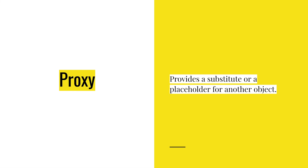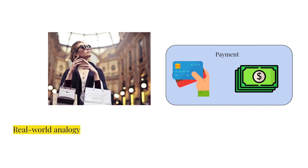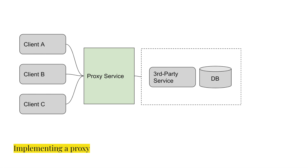The proxy pattern lets you provide a substitute or placeholder for another object. A proxy controls access to the original object, allowing you to perform something either before or after the request gets through to the original object. You can implement a proxy service to handle lazy initialization of heavyweight service objects, query result caching, logging of requests and responses, and so forth.